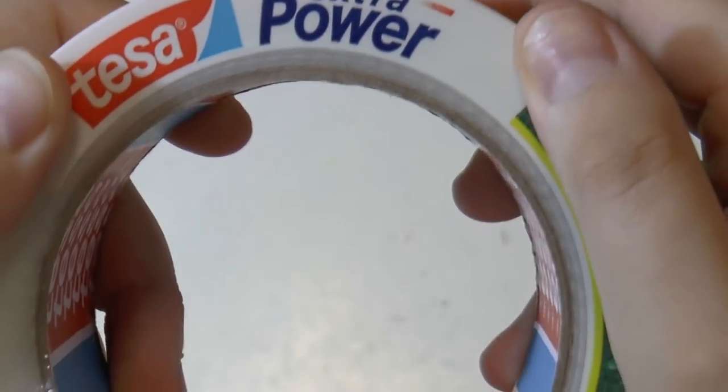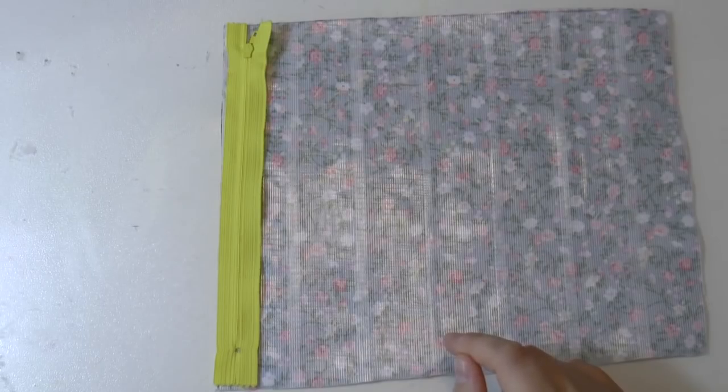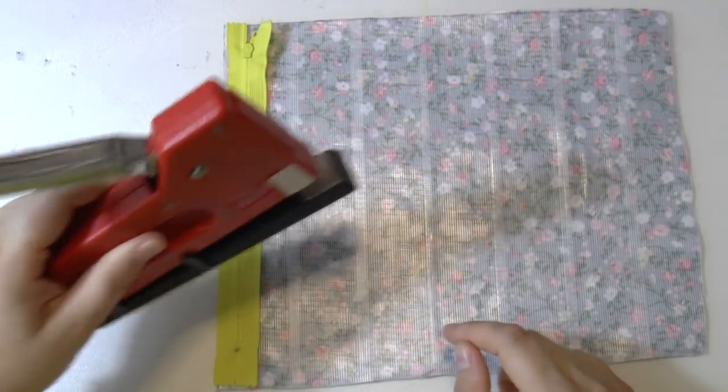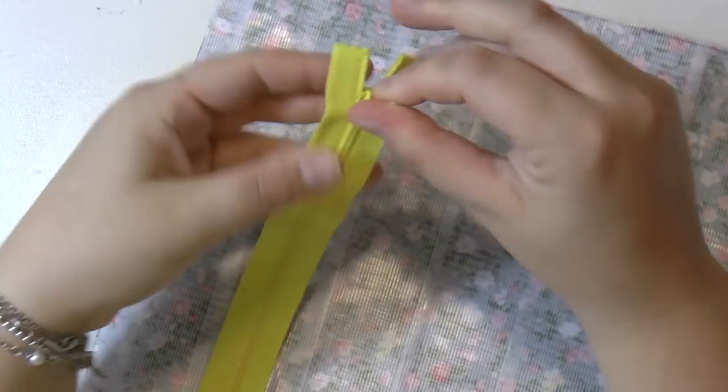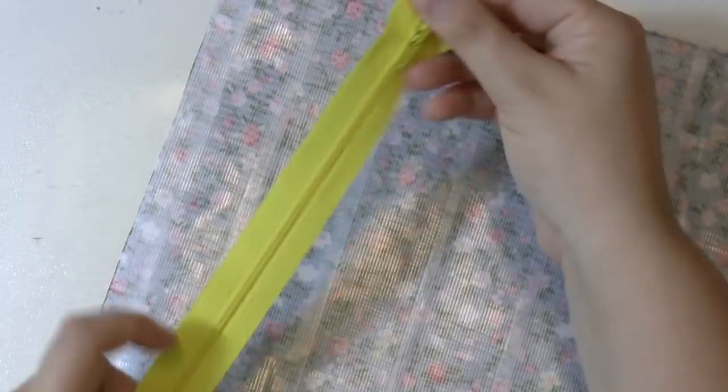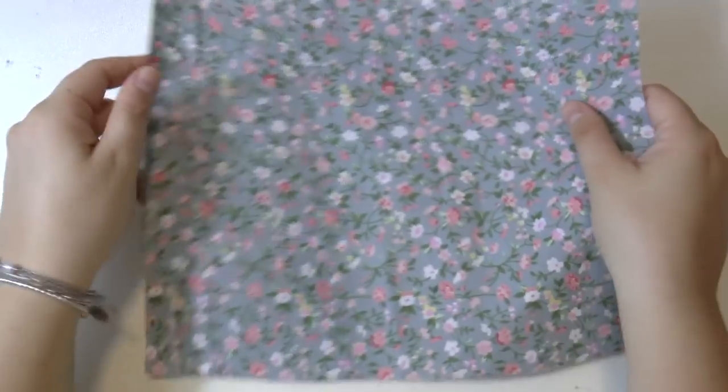So here are the materials for the first two designs. You will need some duct tape, and I'm using the transparent one, but you can use whatever color you prefer. Then you will need a stapler, you will also need a zipper and a piece of fabric.